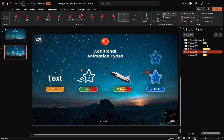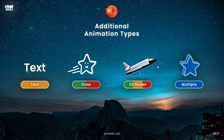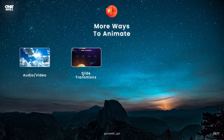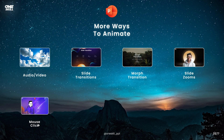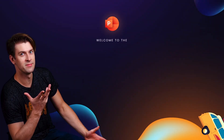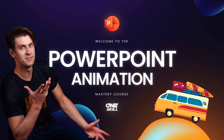Congratulations — in this lesson you have learned about four more awesome ways to animate in PowerPoint: text animations, draw animations, 3D model animations, and multiple animations. If you have any questions please write them in the comments below. Even more amazing tools and ways to animate are coming in the next lesson. Let's start creating those awesome animations — I'll see you on the course.